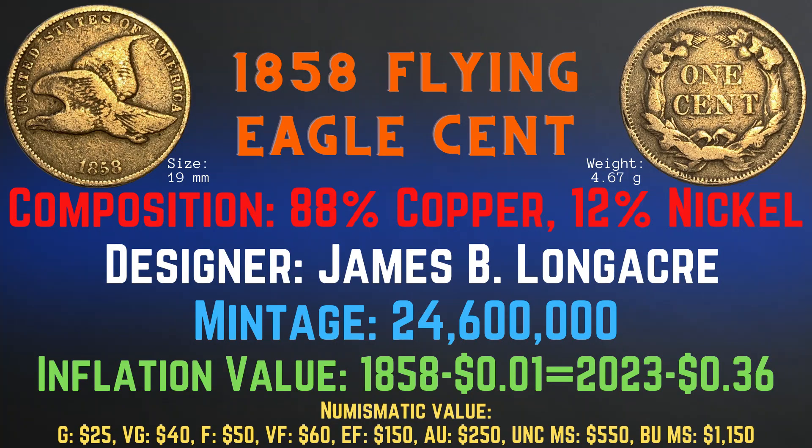The 1858 Flying Eagle cent has a mintage of 24,600,000 and an inflation value of 36 cents for the year 1858. The numismatic values on this coin range from $25 in good condition up to $1,150 in brilliant uncirculated mint state condition.